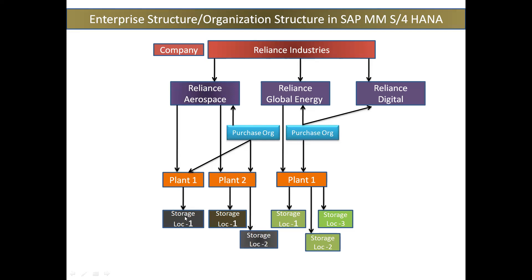Each plant will have different storage locations. What are they doing with storage locations? They are storing all the materials. So a storage location is the storage area where all materials are stored. For this plant, you can see they have two different storage locations — there can be one, two, five, or ten also. It will completely depend on the business, the size of the business, and the size of the warehouse required. Based on that, they will create different storage locations.